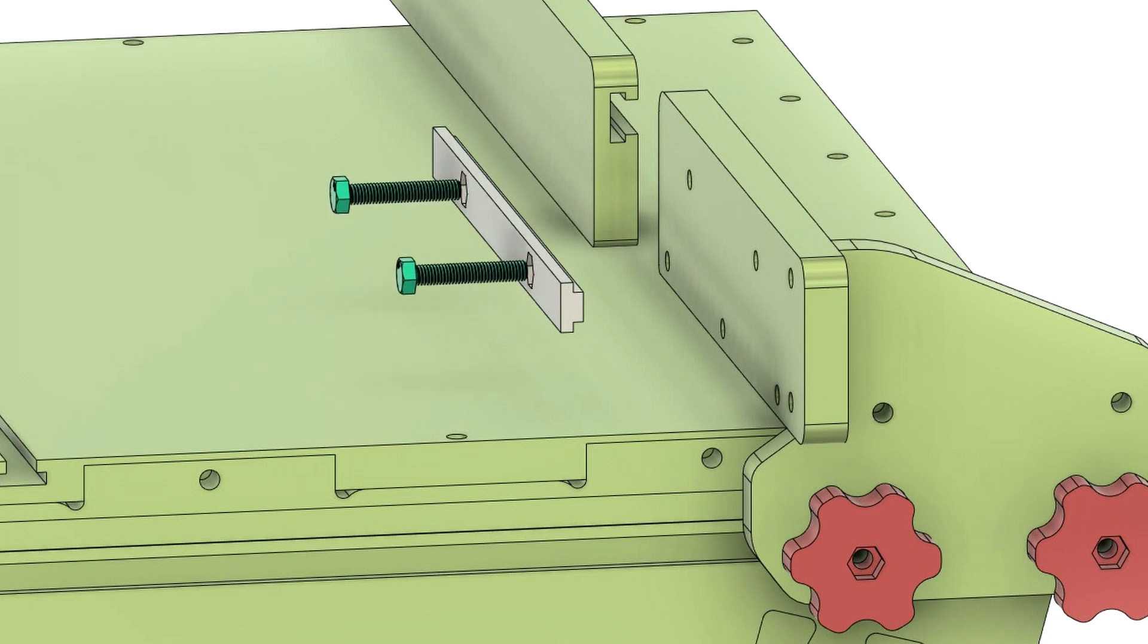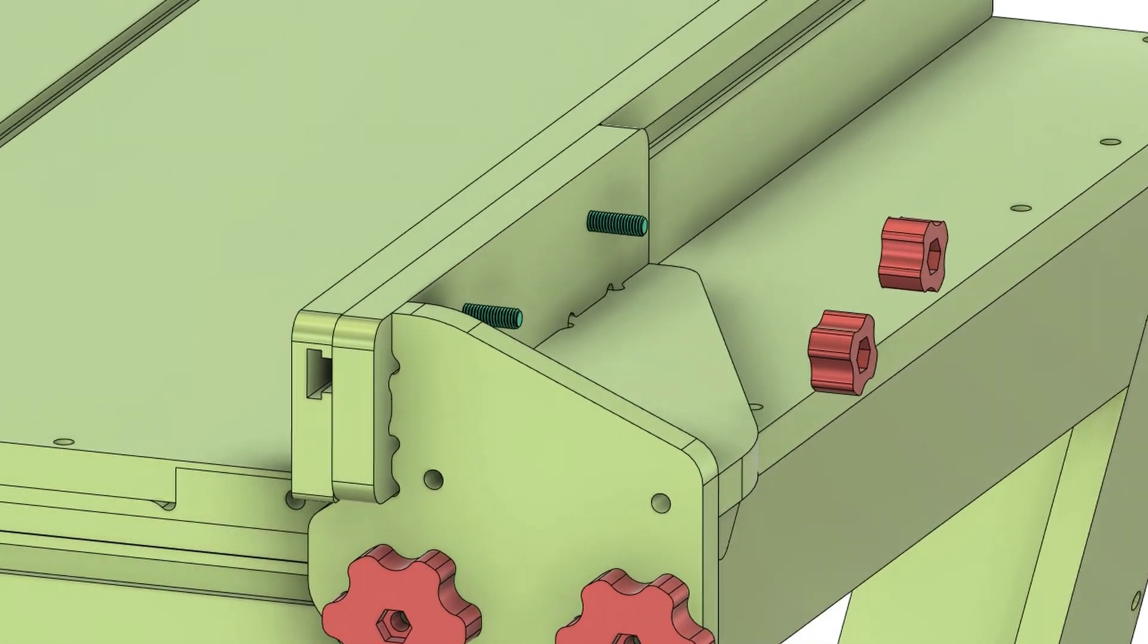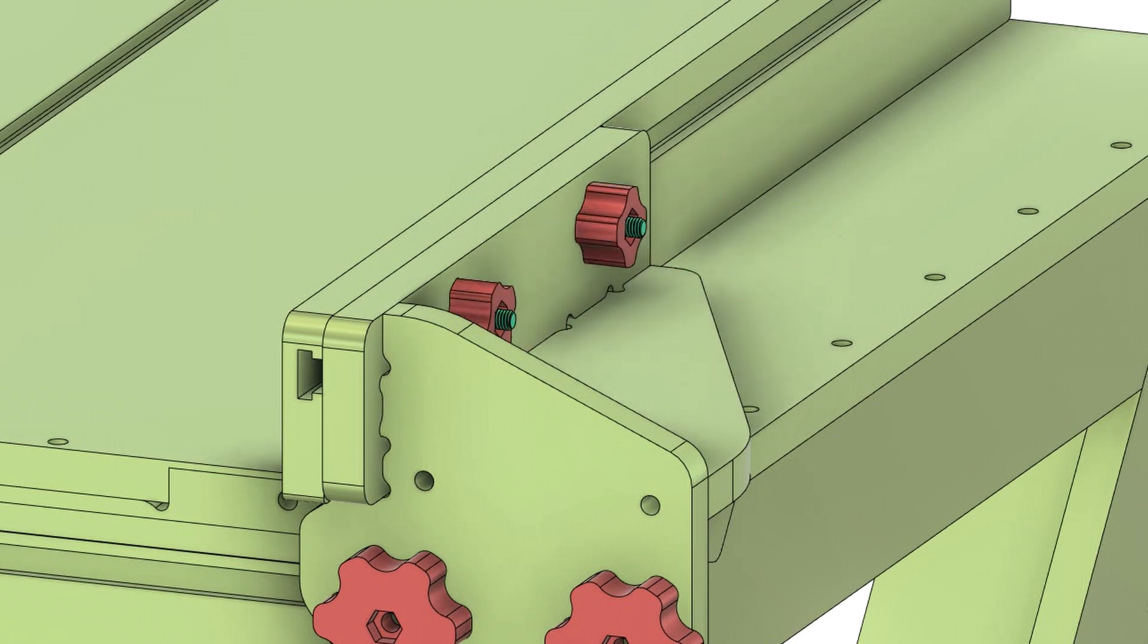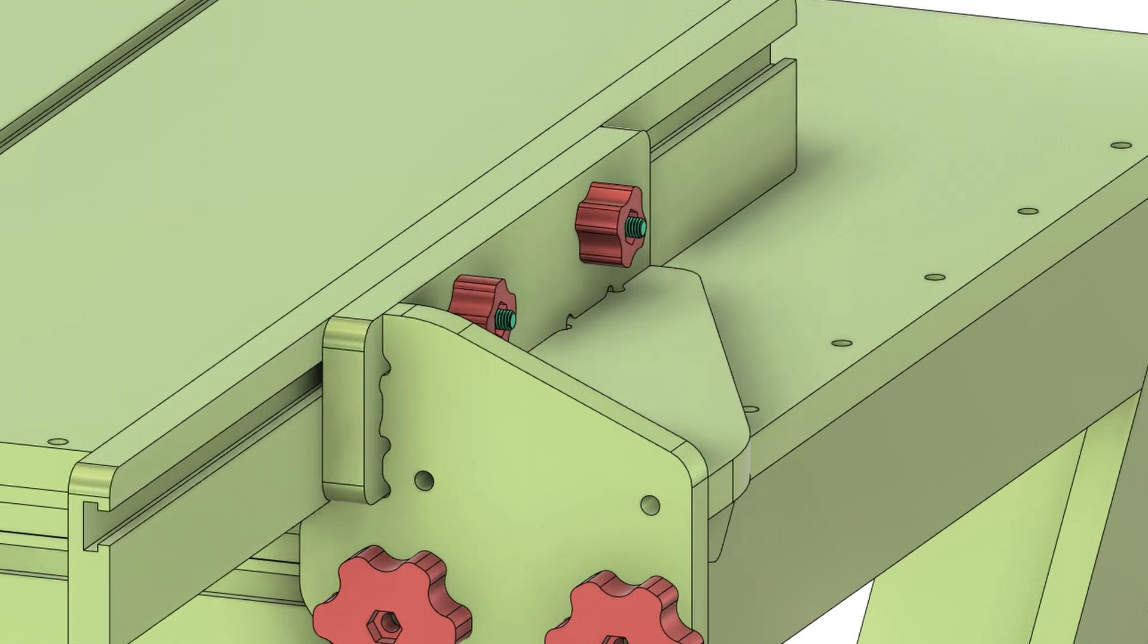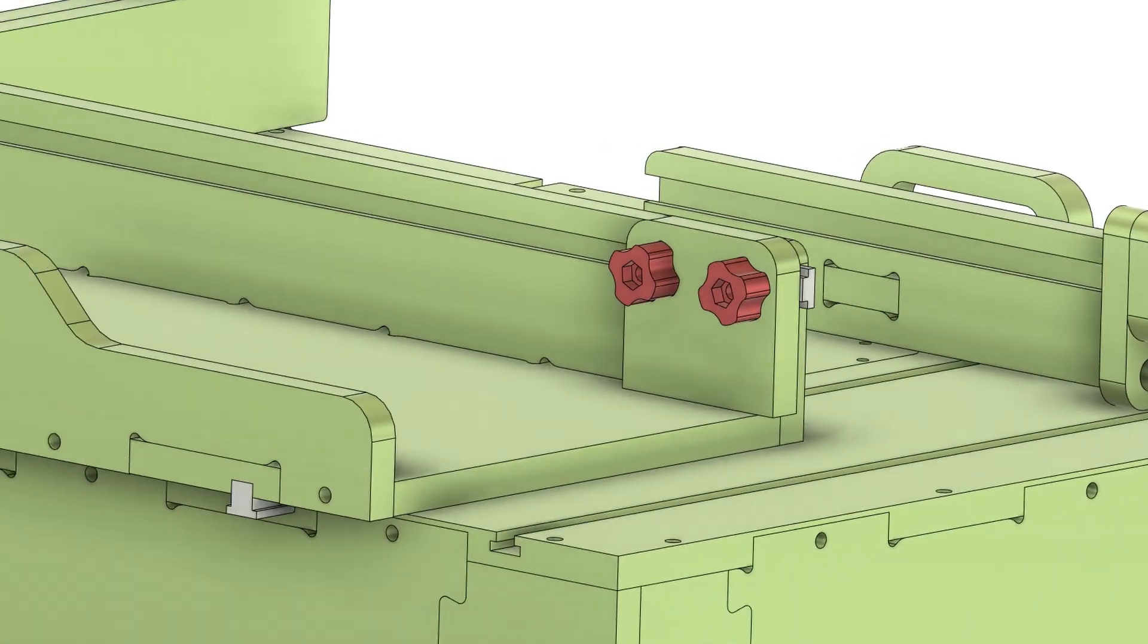To achieve that I decided to make a T-slot cut in the fence and make a T-profile with two screws. This way we can easily adjust the fence and secure it in place. I used the same T-slot and profile mechanism to make the miter gauge and crosscut sled.